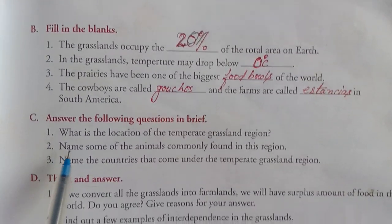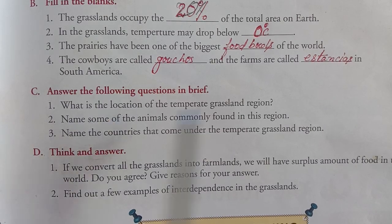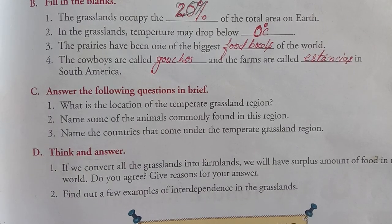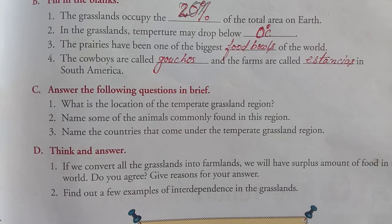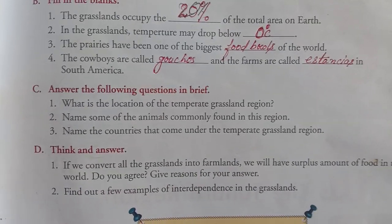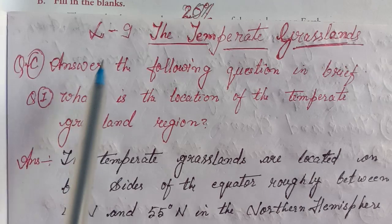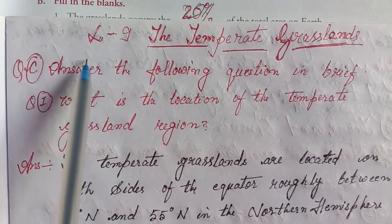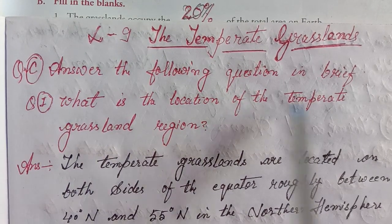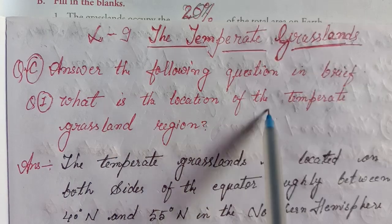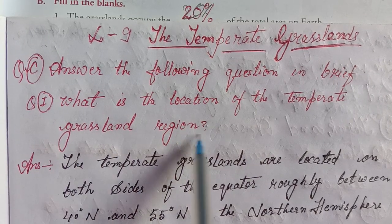Section C — answer the following questions in brief. I will solve questions C and D in the notebook. Chapter 9, The Temperate Grasslands. Answer the following questions. First, what is the location of the temperate grassland region?